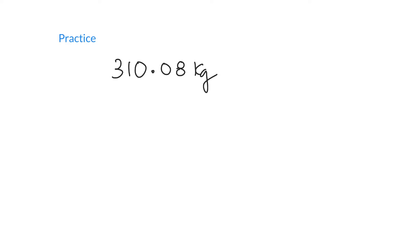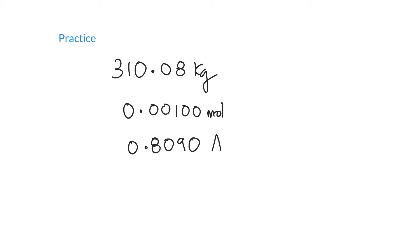Let's try a few practice examples. Consider 3.8100 kilograms, 0.00100 moles, and 0.8090 amperes — count the significant figures for each. Pause the video here and then come back. For 3.8100: non-zero digits 3, 8, and 1 are significant. There are no leading zeros. The zeros between 8 and 1 are captive, so they count. And there are no trailing zeros. Actually, every digit written is significant, giving five significant figures.